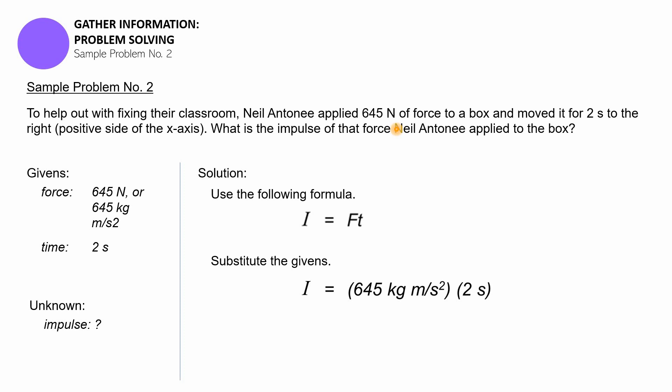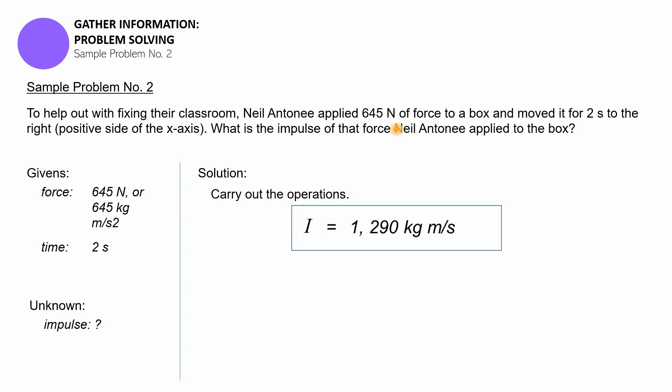We carry out the operations and get positive 1,290 kilograms meters per second. What happened there is we cancelled the meters per second squared and one second, so the exponent disappeared. Since it's positive, we can expect that this impulse is actually going towards the positive side of the x-axis.